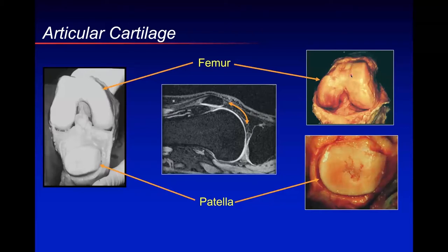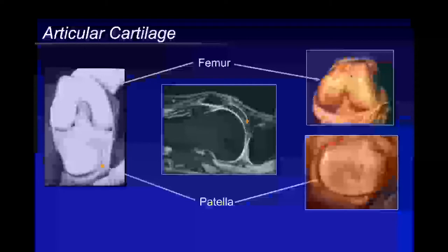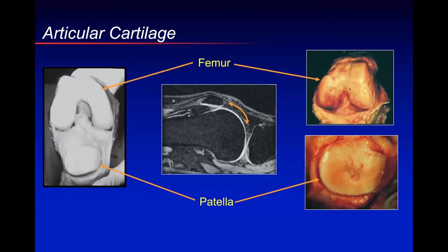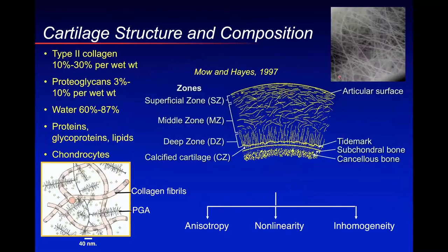Cartilage tissue engineering has been offered as a potential alternative — maybe an interim solution before you get to an implant, because implants have a finite lifetime of about 20 years. So perhaps we can grow cartilage and replace the entire articular surface. When you grow cartilage, you need to understand the structure-function relationships — how cartilage develops its material properties to sustain loads in the joints.